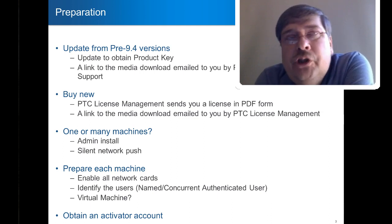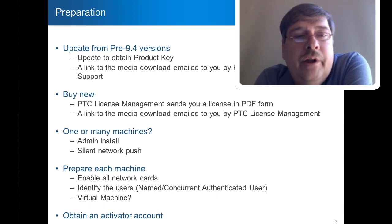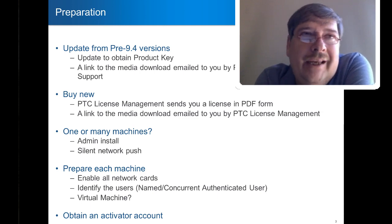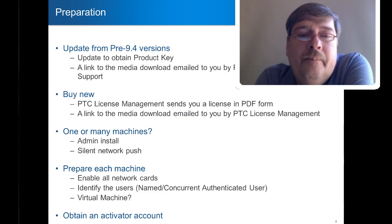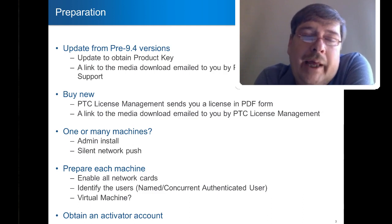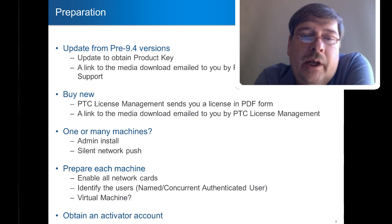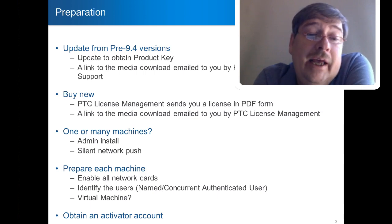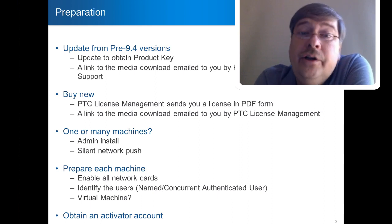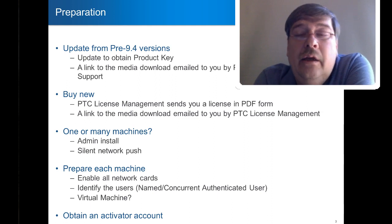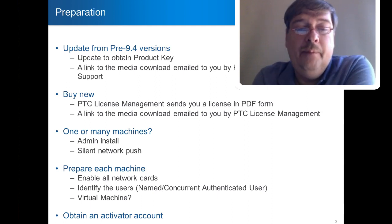Once you have entered all the information — really just your name and email address — we will send you a link. That link is just a check to make sure we found your correct email address. You click on the link and that enables your account for activation. If you go halfway through that and try to use the activator account, you'll get an error message saying that you didn't click the link, so your account is not enabled for activation.